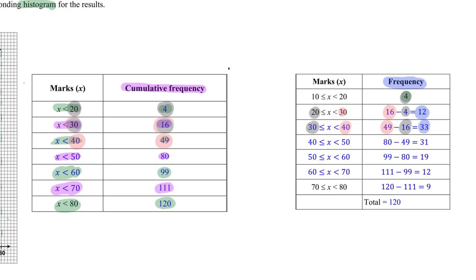Continuing this method: for 40 to 50, I take the students scoring less than 50 minus those scoring less than 40 — that's 80 minus 49, giving 31 students. For 50 to 60, students scoring less than 60 minus those scoring less than 50 gives 19 students.